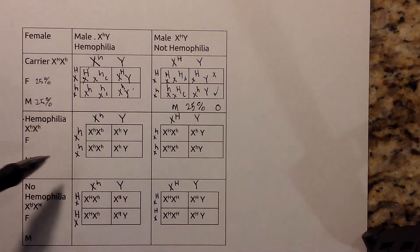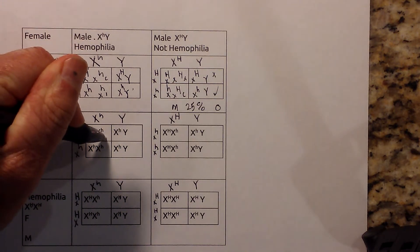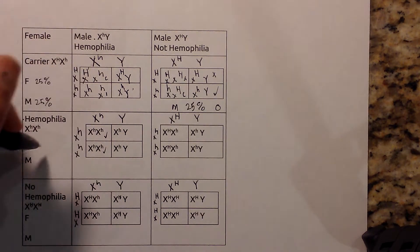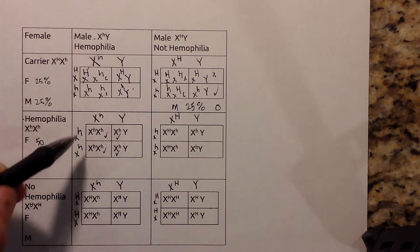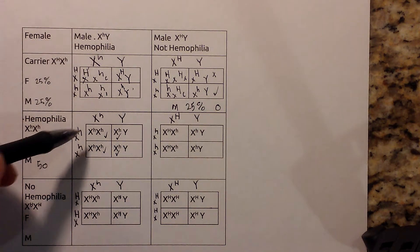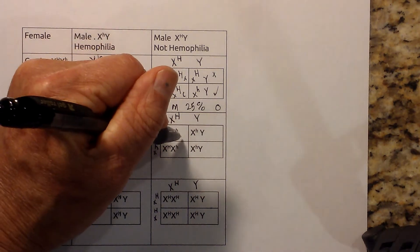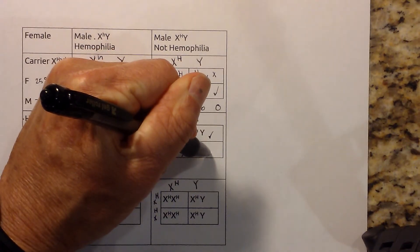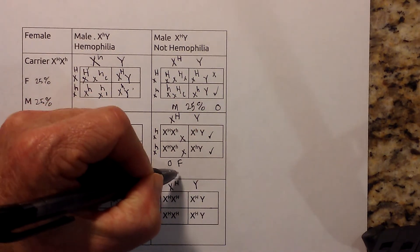In this particular example, this female will have hemophilia and this female will too — so that's 50% for females. This male and this male also have it — so 50% for males. This is the case where the mother has the disease and the father has the disease. And in this next example, the females will not have hemophilia, but the males will — giving a 0% chance for females and a 50% chance for males.